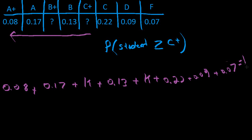Now all of this is going to be equal to 1. So if we try to simplify this, just add up all these numerical values and add up the K values, we would get something like 0.76 add 2K is equal to 1.